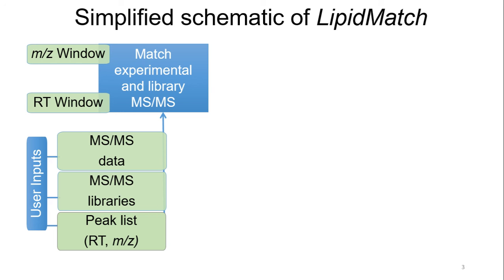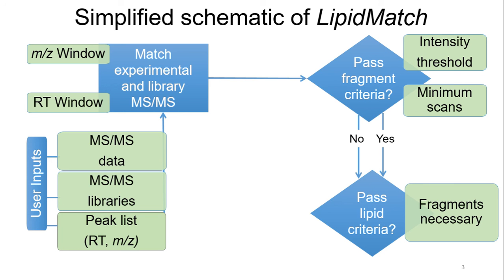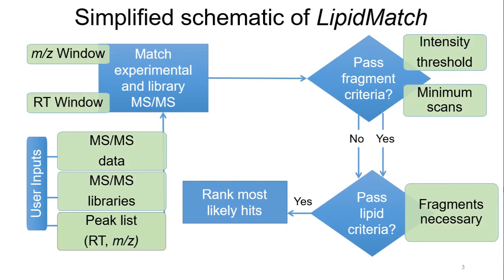Once scans are found under each feature, those MS-MS scans are queried for each fragment contained in the libraries. If a fragment's intensity in the scans is above the threshold set by the user, that fragment is confirmed for that lipid species under that feature. Users can also modify the fragments necessary for confirmation, both by lipid class and by lipid fatty acyl constituents. If all required fragments are confirmed, that lipid is identified. All identified lipids are then ranked by the most likely hits based on the sum of fragment intensities, and the identifications are appended to the peak list along with peak heights and any statistical information.